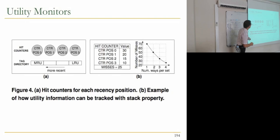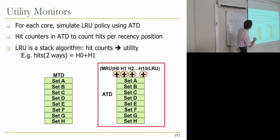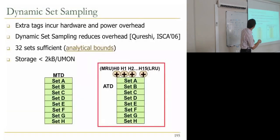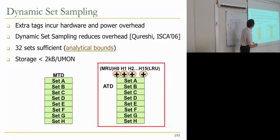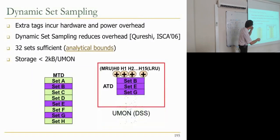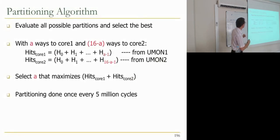The problem is these counters multiply a lot — if you want them for each application you don't want them for every set, so we use dynamic set sampling described earlier. That's a substrate usable in many cache optimizations. With 32 sampled sets being sufficient and storage less than 2 kilobytes per utility monitor, we sample to form the miss-rate curve.